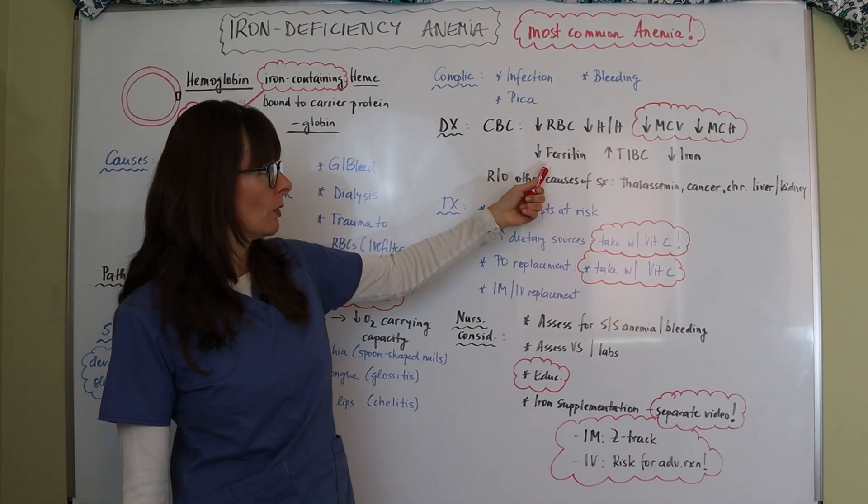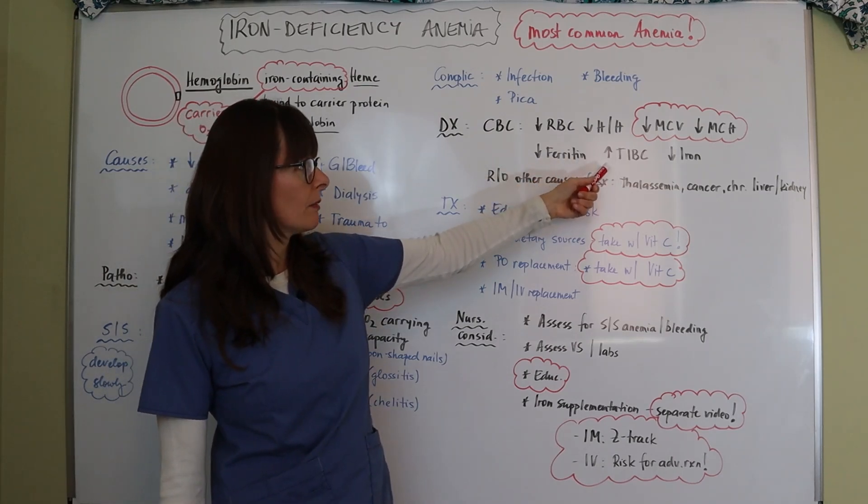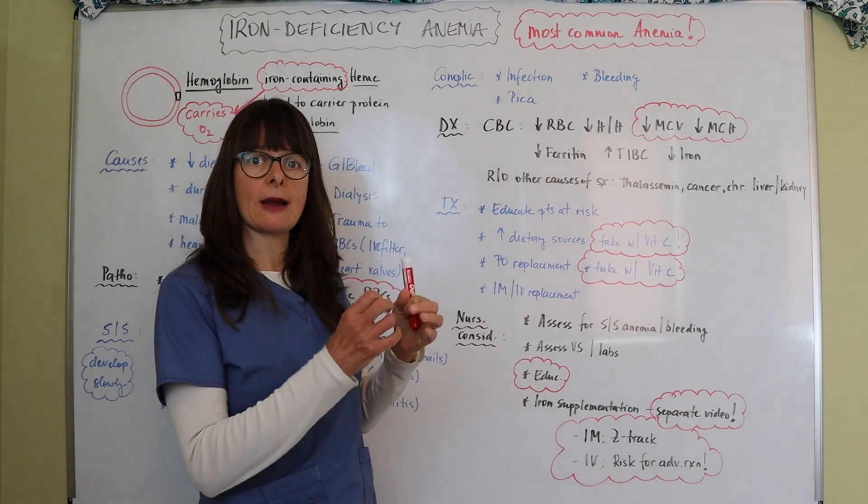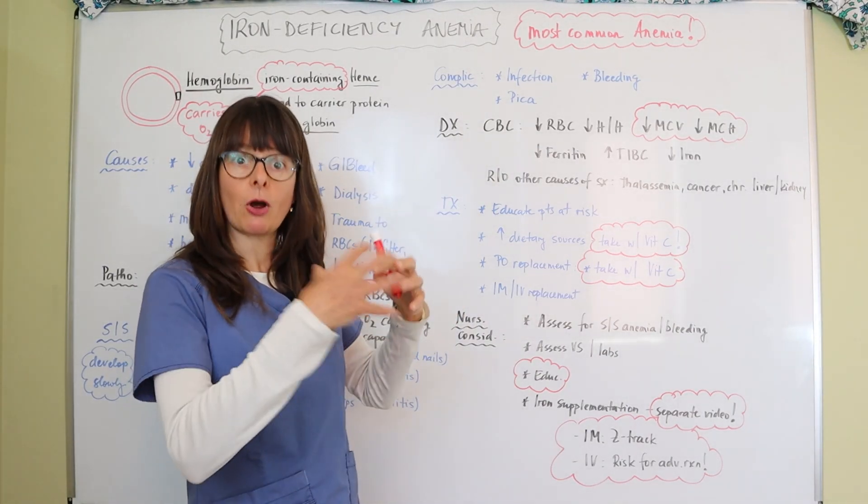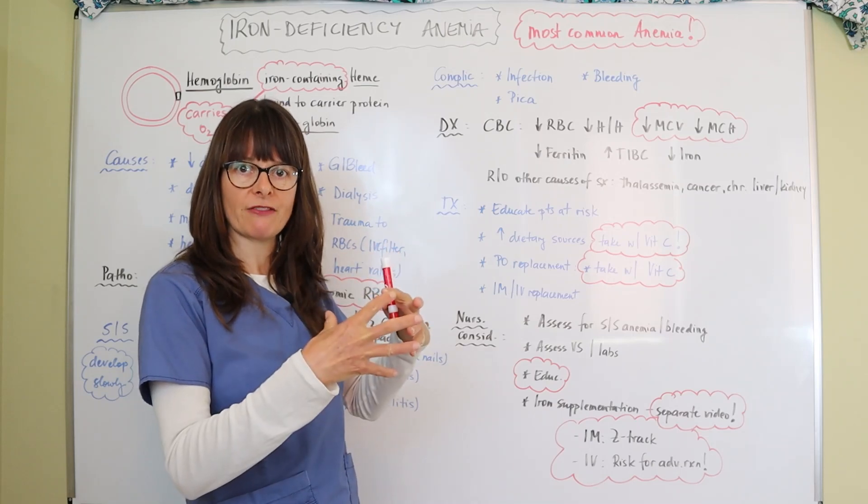Also the ferritin will be low, the total iron binding capacity will be increased because now the iron that's binding to these hemoglobin molecules they're all used up because we just don't have enough iron available in the bloodstream, and of course serum iron will go down.